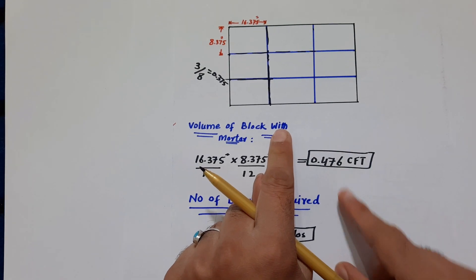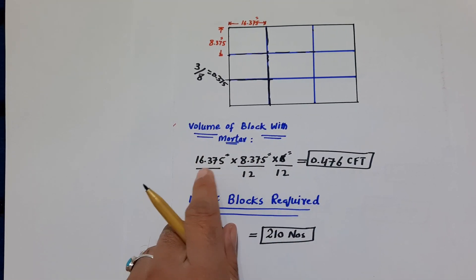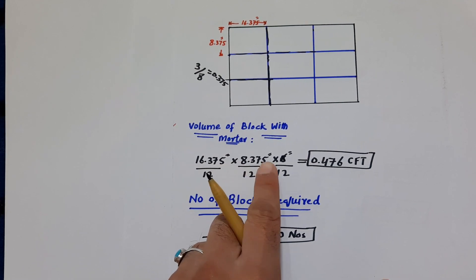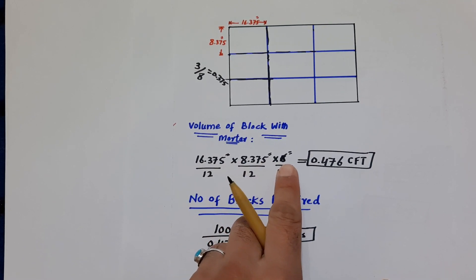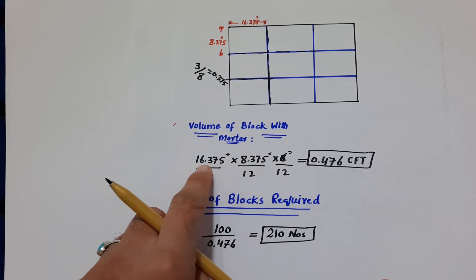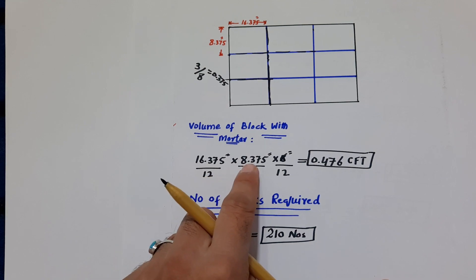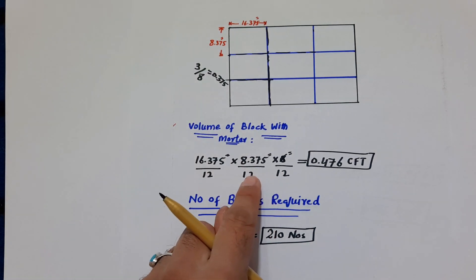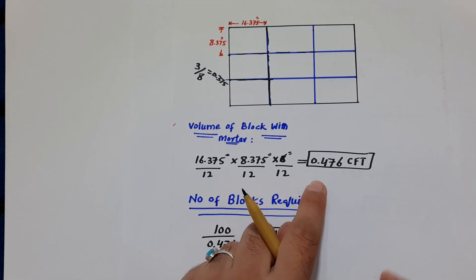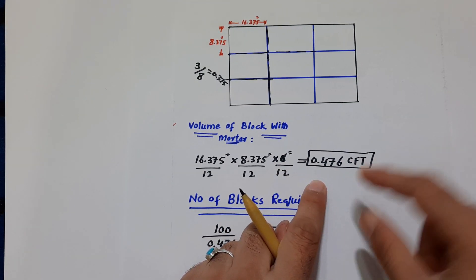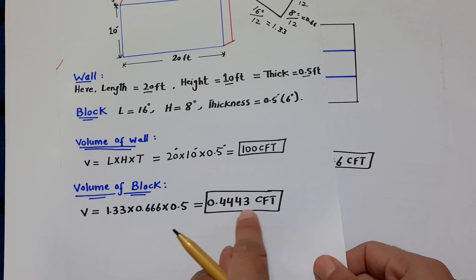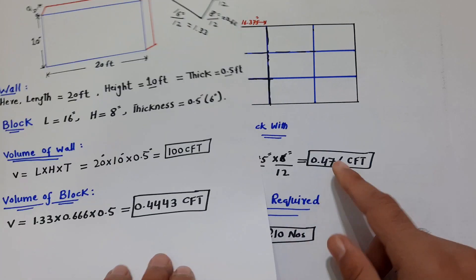Therefore, the volume of the block with mortar is 16.375 × 8.375 × 6 inches. Converting to feet: 16.375 ÷ 12, 8.375 ÷ 12, and 6 ÷ 12. The total volume of the block with mortar becomes 0.476 cft, compared to 0.443 cft without mortar. This difference accounts for the mortar joints binding the blocks.